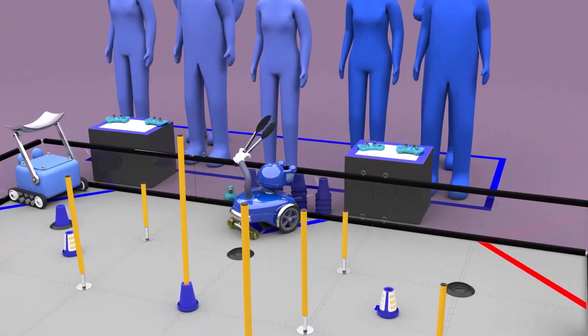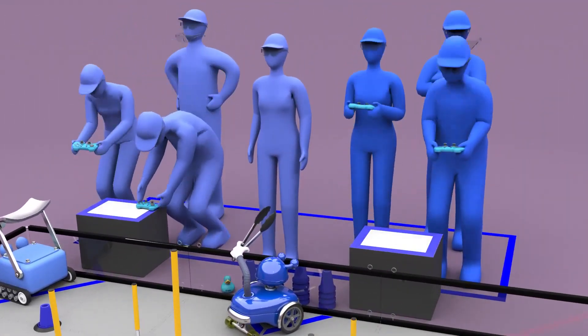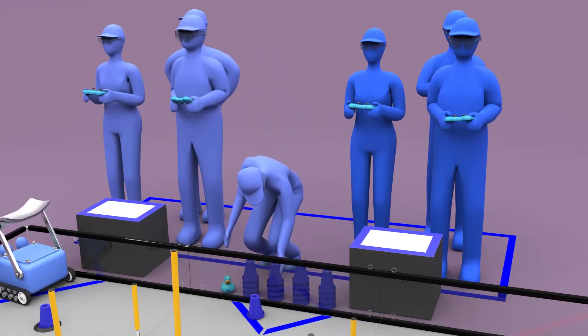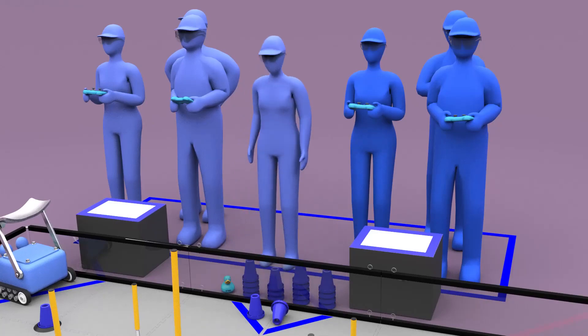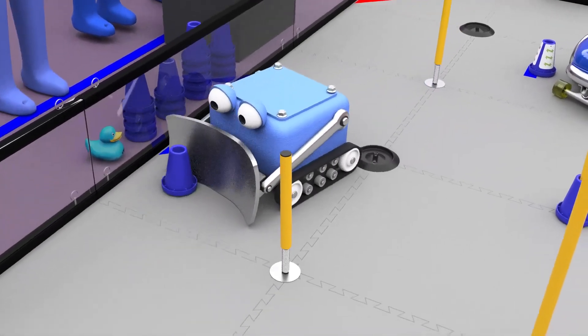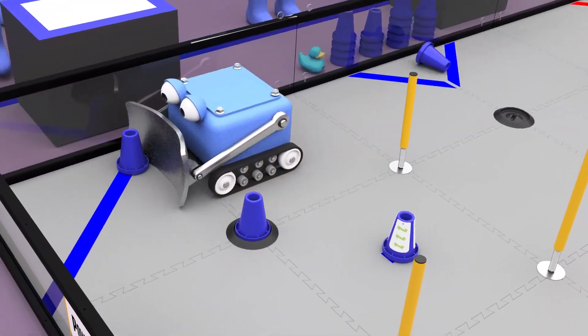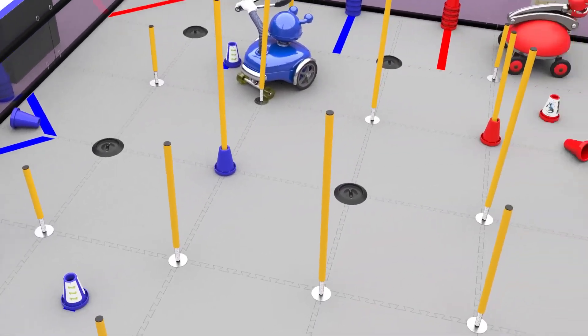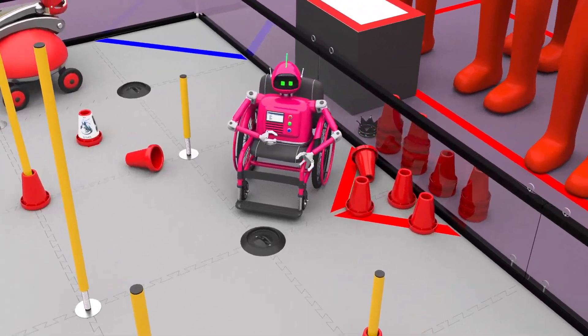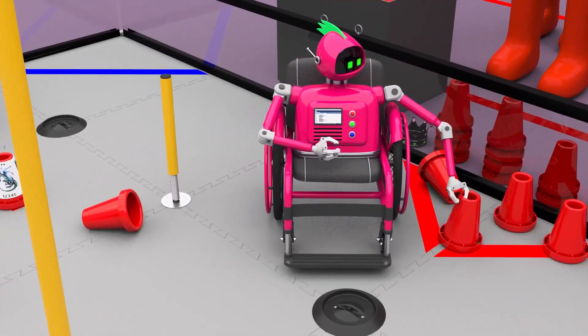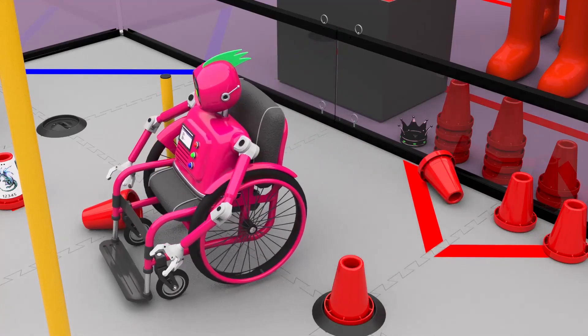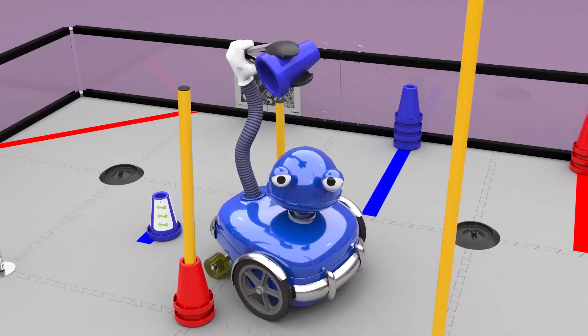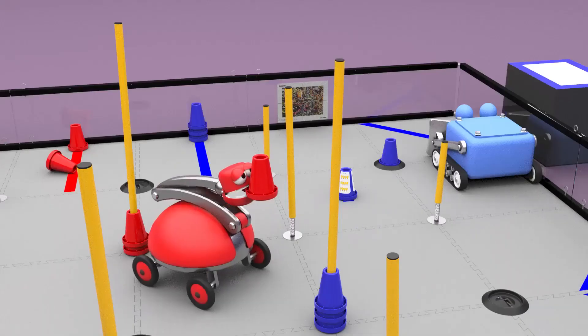Following the autonomous period is the two-minute driver-controlled period. During this period, human players may introduce new cones into the substations. Each cone that is placed in its matching color terminal earns one point. Securing cones in junctions earns the same points as during the autonomous period. Two points for the ground junction, three points for the low, four points for medium, and five points for the high junction.